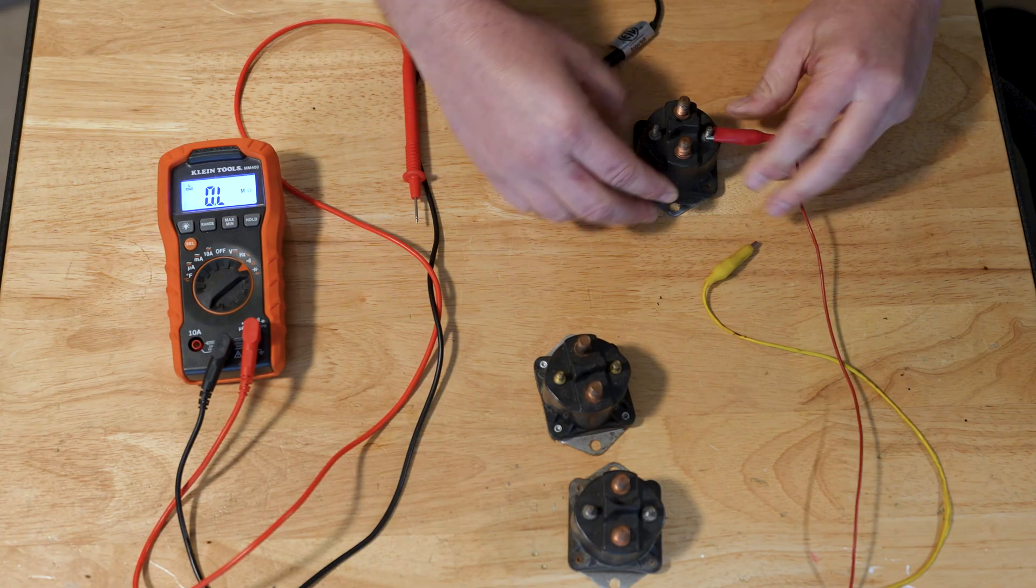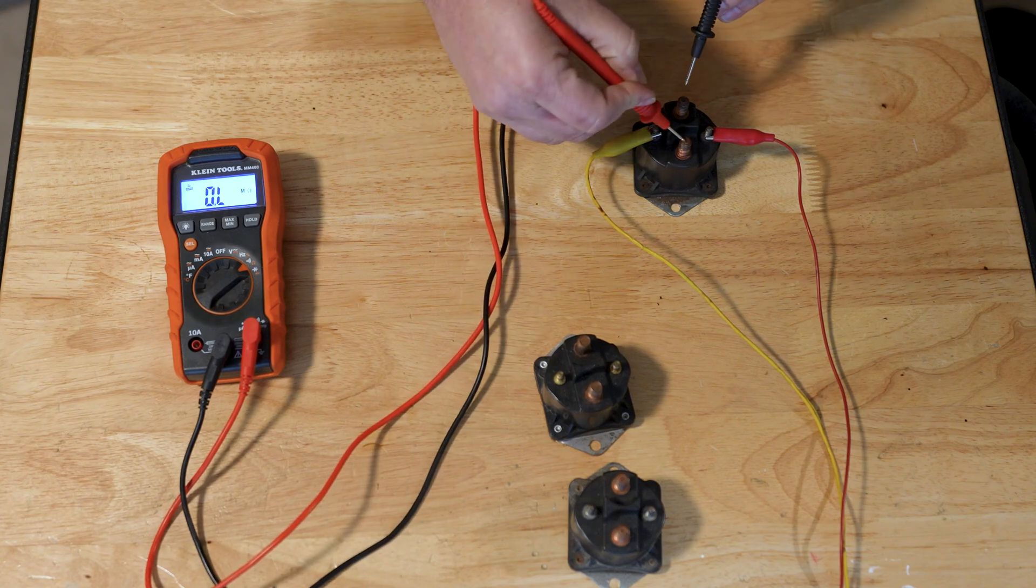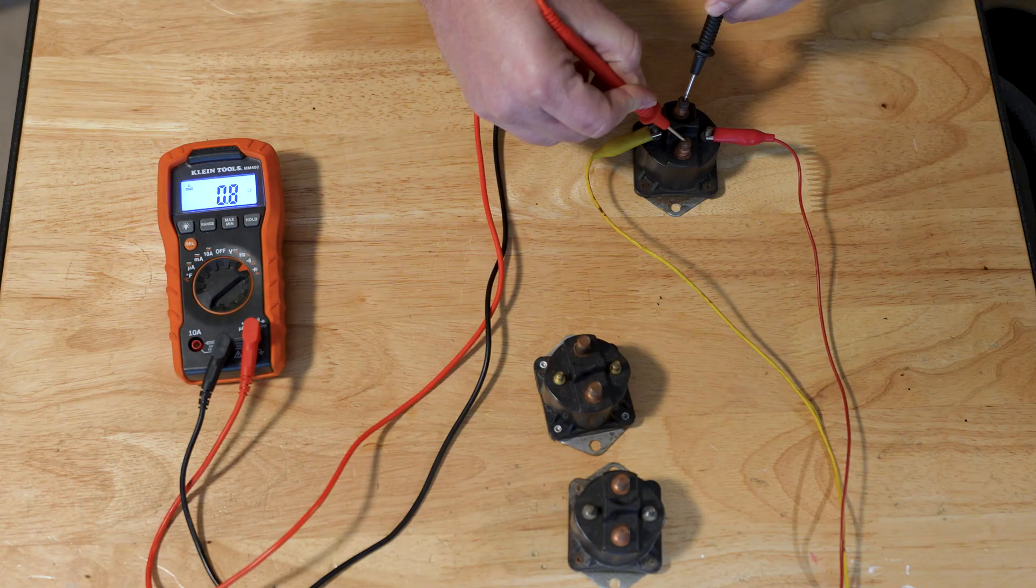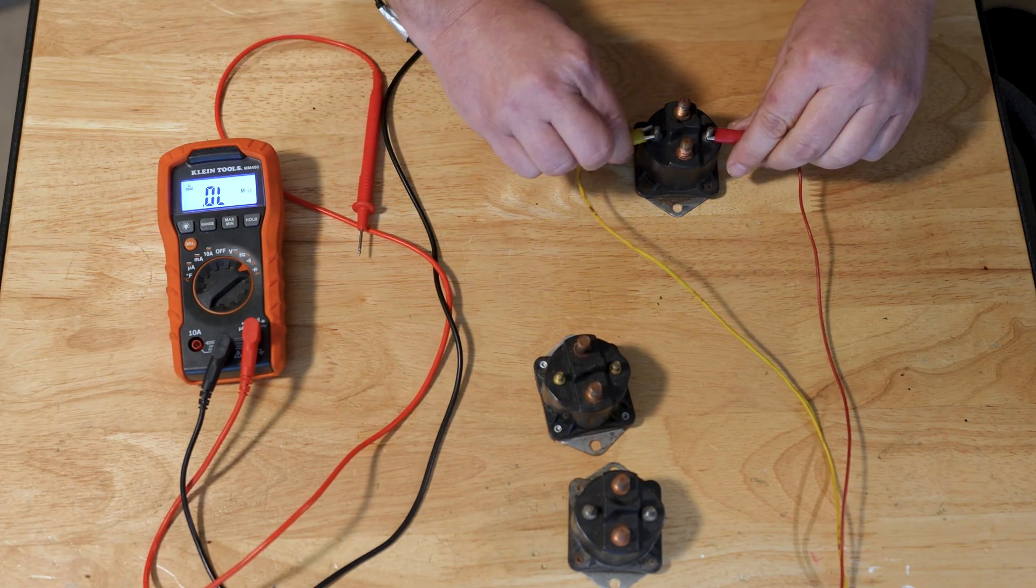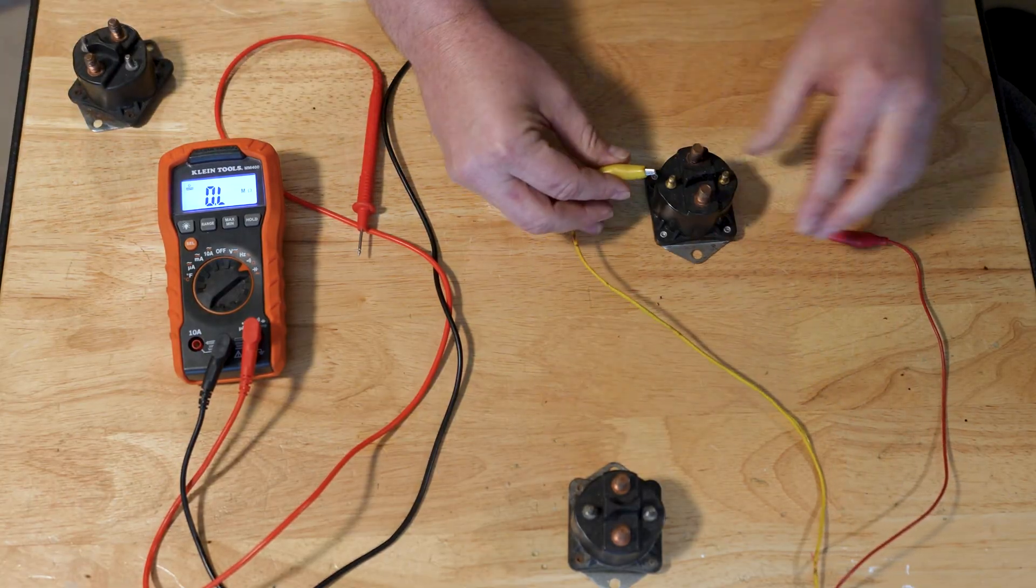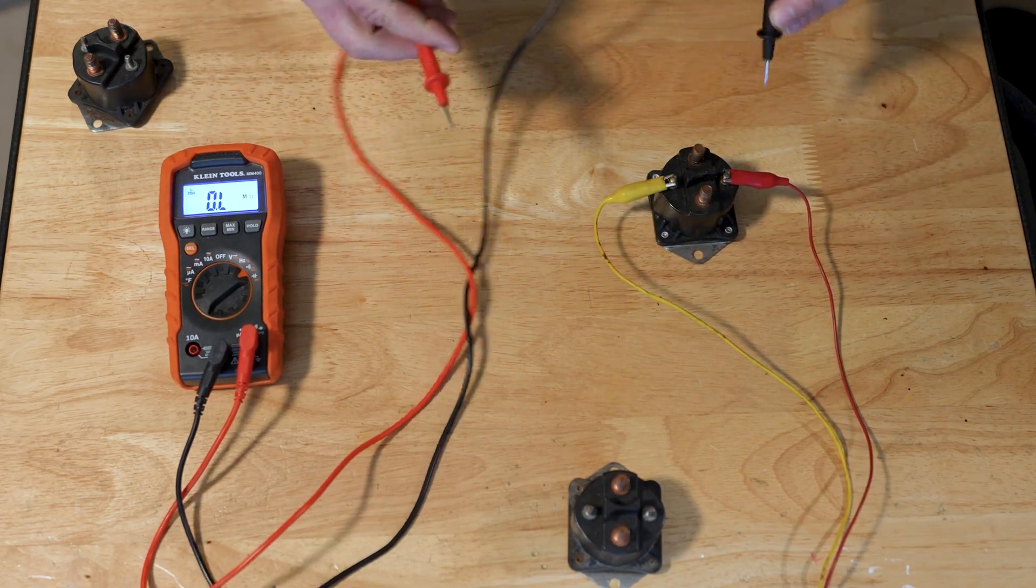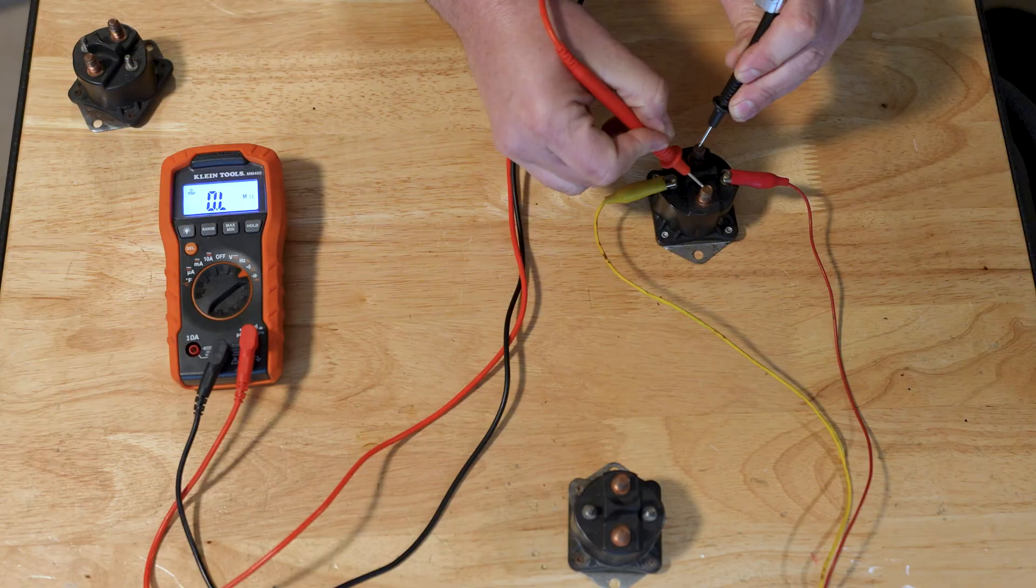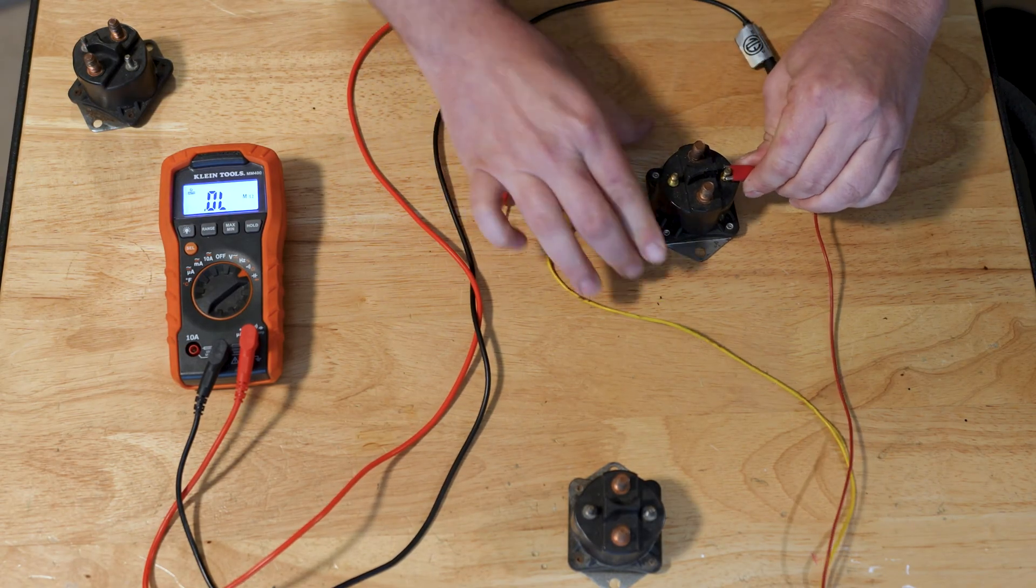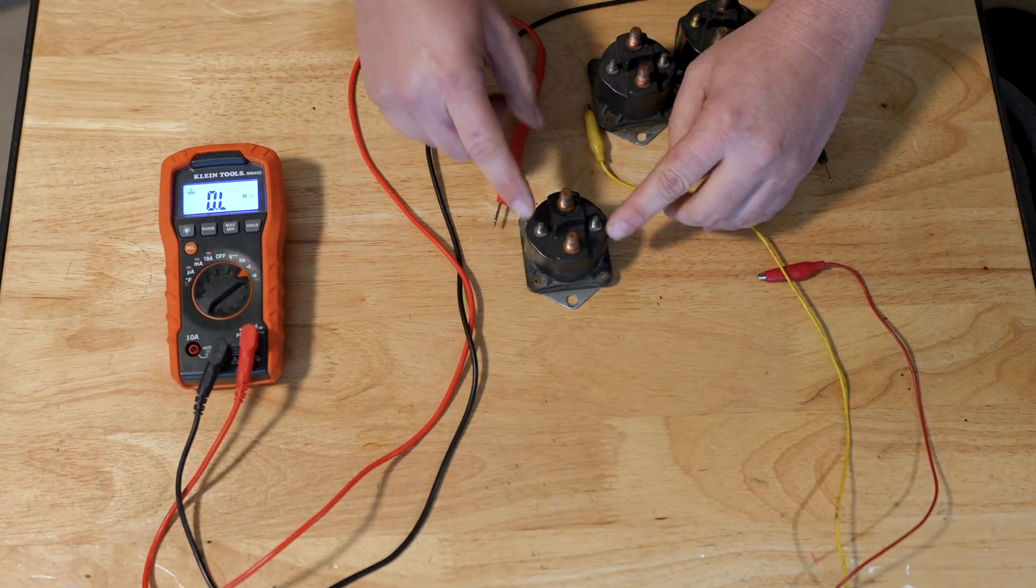Let's test this one. 0.8, that's about right. 0.2, so this one's really good. So what we know here is this one right here is our bad one.